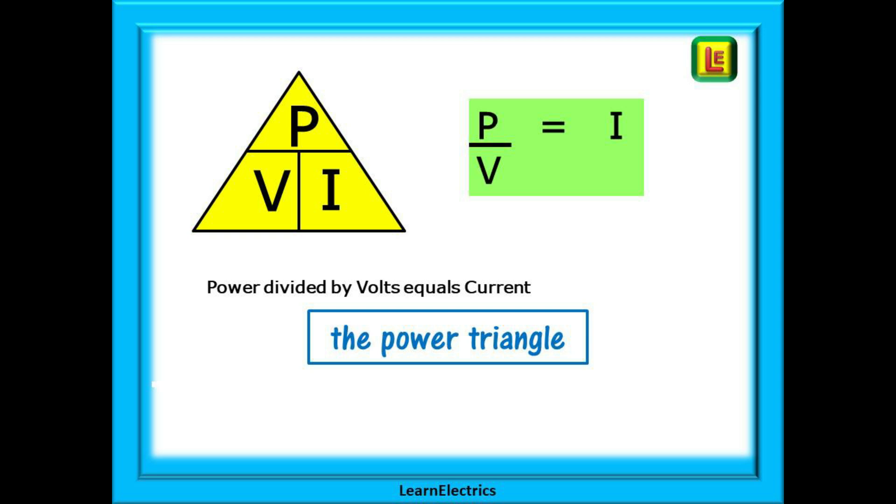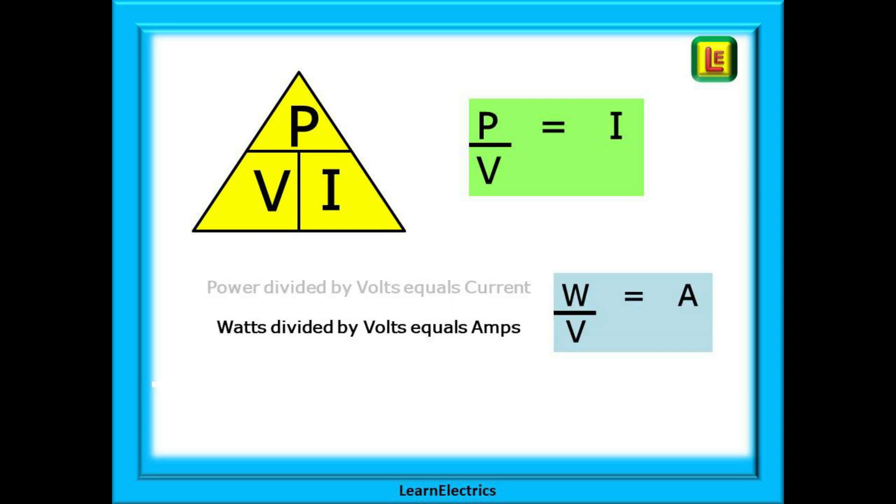You should already be familiar with the power law triangle. Power divided by volts equals current. Some prefer to say that watts divided by volts equals amps. It's the same thing.